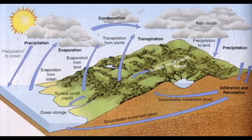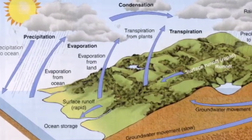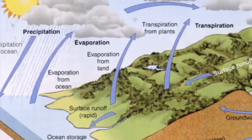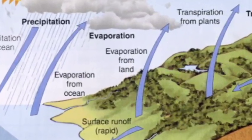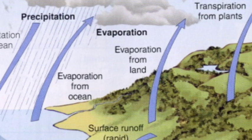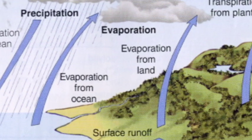There are six main processes in the cycle. Incoming solar energy evaporates water from oceans, streams, lakes, soil, and vegetation. The amount of water vapor that air can hold depends on its temperature, with warm air holding more water than cold air.